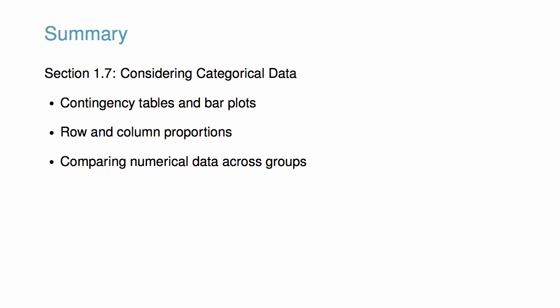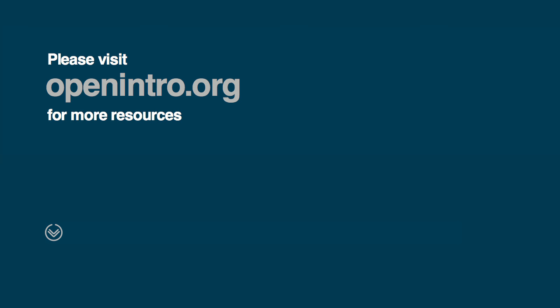In this video, we explored summarization and visualization techniques for categorical data, including contingency tables, bar plots, and approaches for comparing numerical data across groups. If you learned something you found interesting, share this video with a friend, and visit openintro.org for more resources.